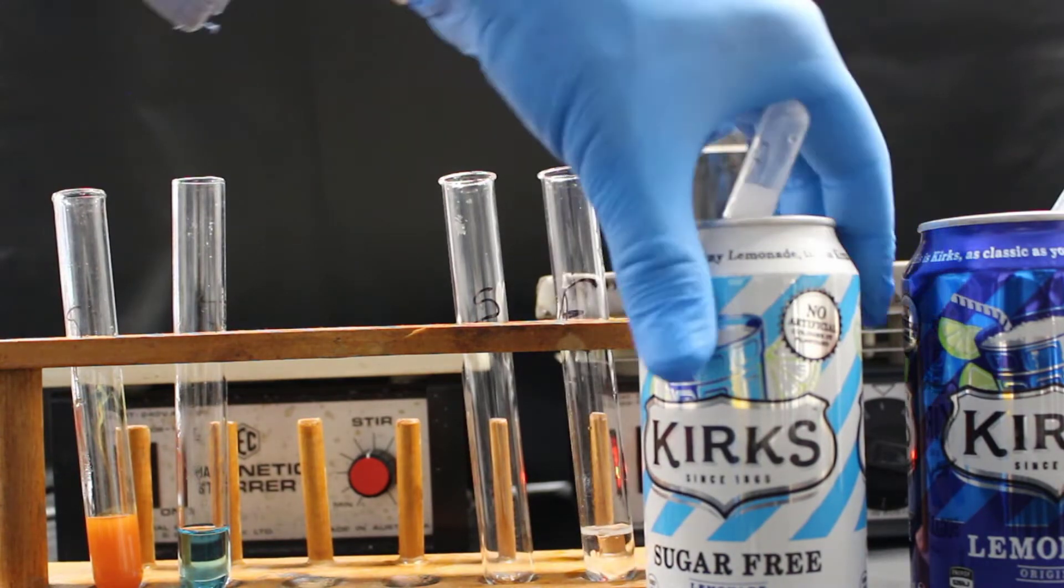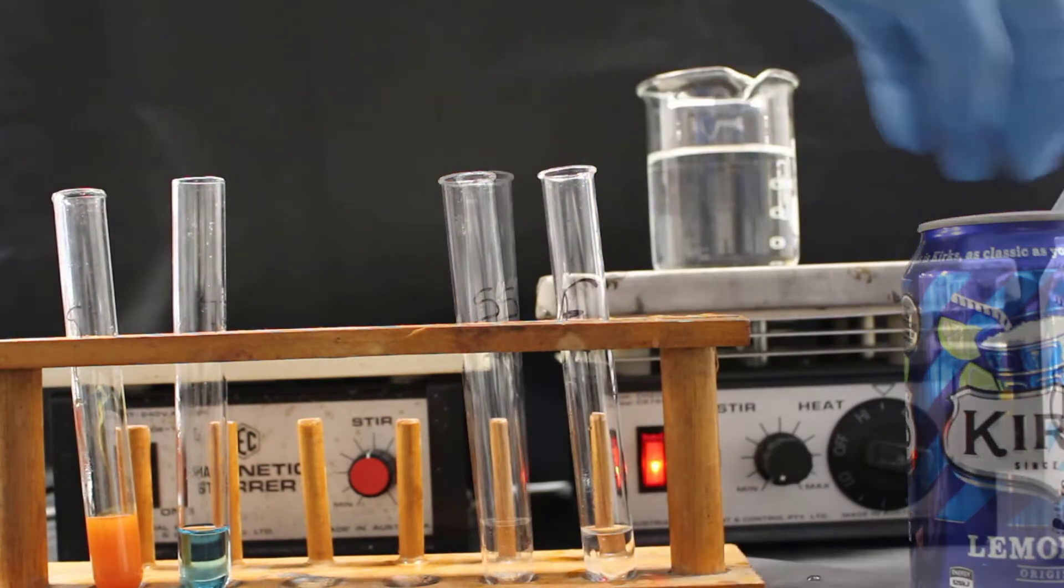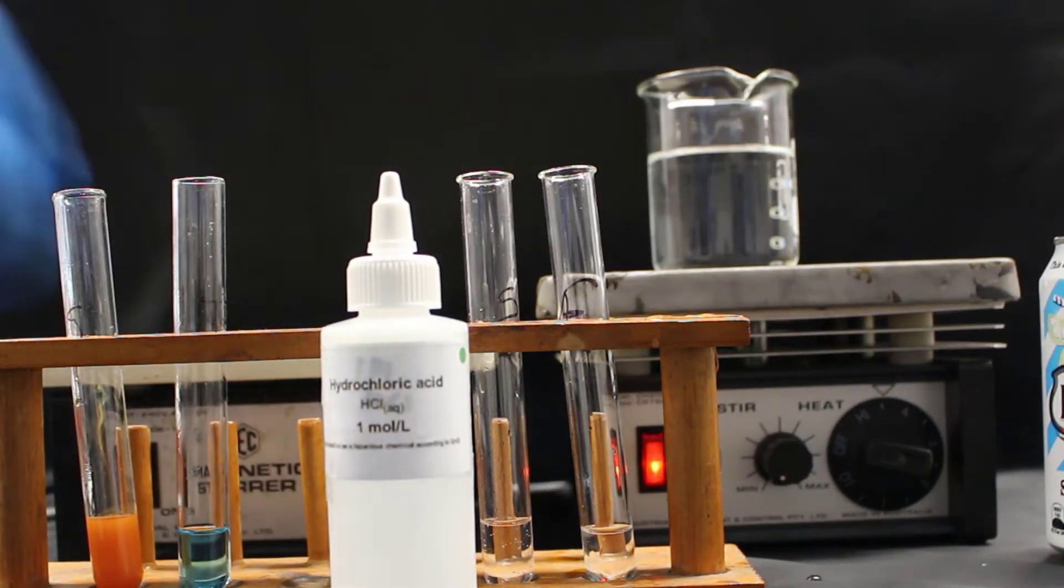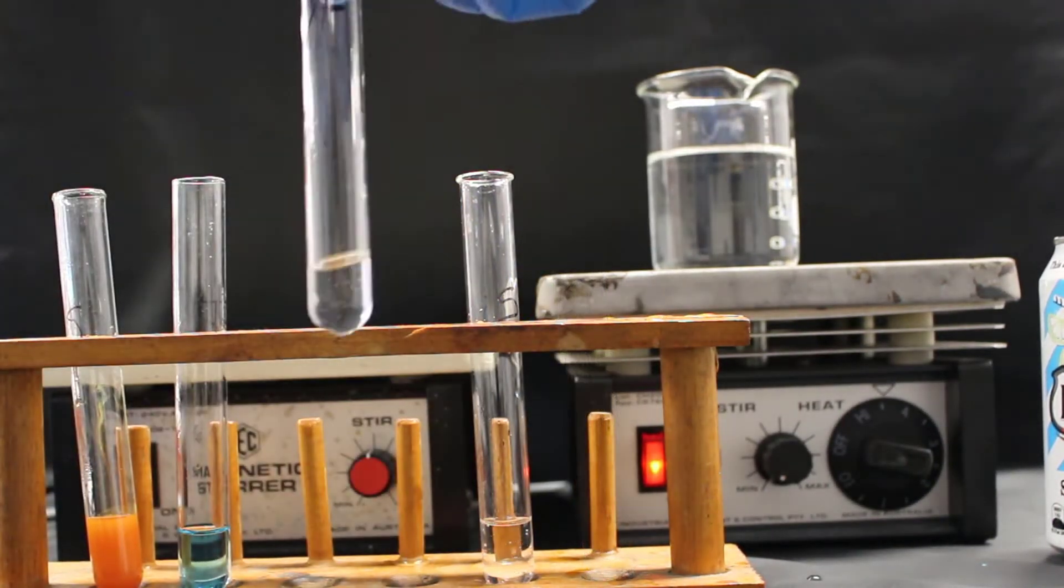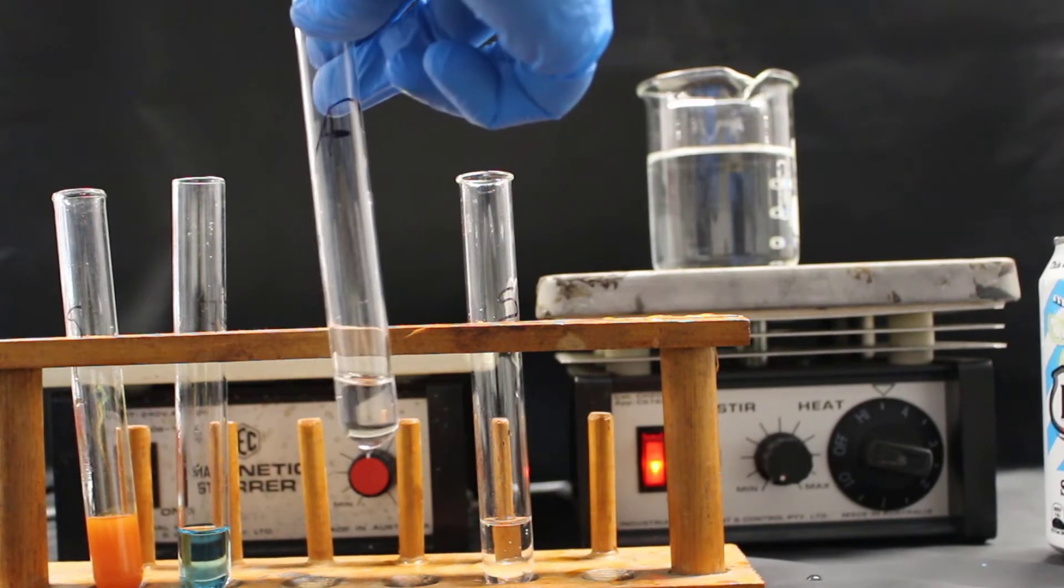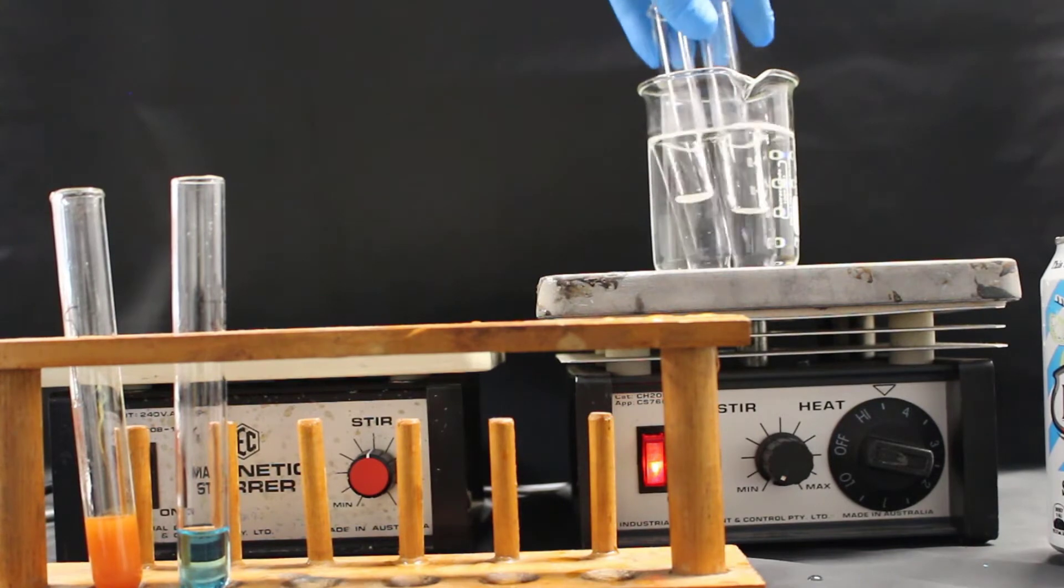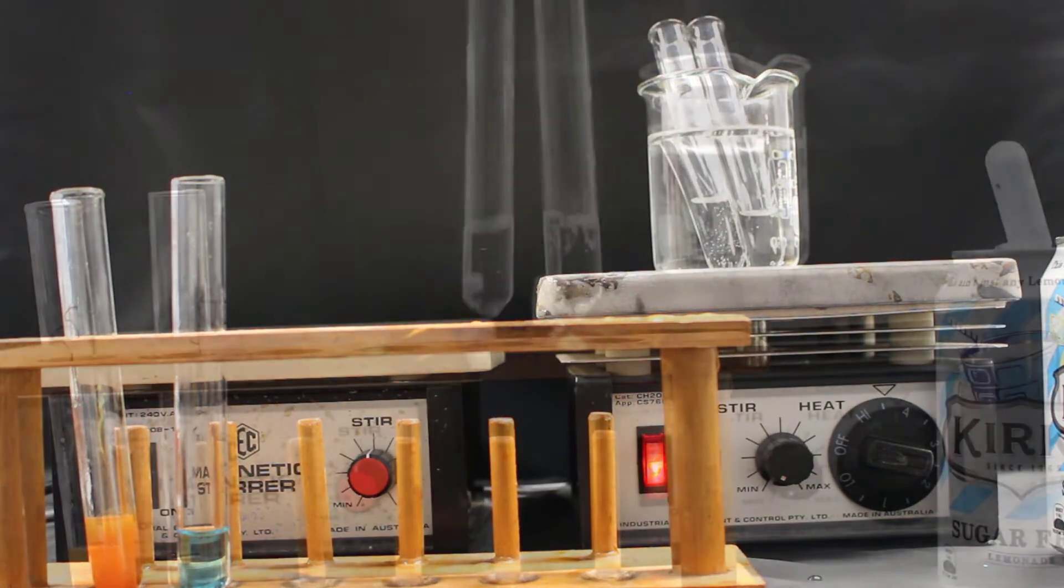The first thing we do is put 5ml of lemonade in each of the test tubes again. But this time, we also add hydrochloric acid. 5ml of hydrochloric acid are added to each of the test tubes. And then the test tubes are boiled in the water bath for 5 minutes.